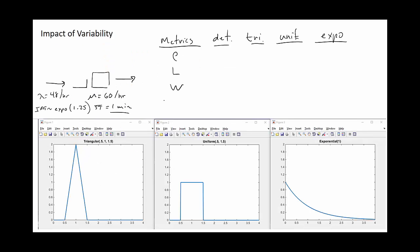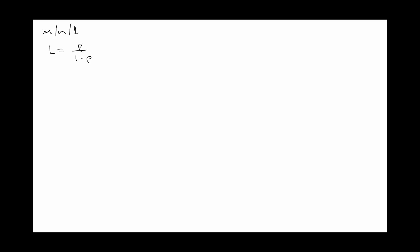Now, for our four cases — deterministic, triangular, uniform, and exponential — we're interested in the queuing metrics: utilization, expected number of entities in the system, and expected time in system at steady state. We essentially have two general cases: the MM1 case for the exponential distribution, where the number in the system equals rho over one minus rho, and the MG1 case for the general distributions, which applies to the deterministic, triangular, and uniform cases.